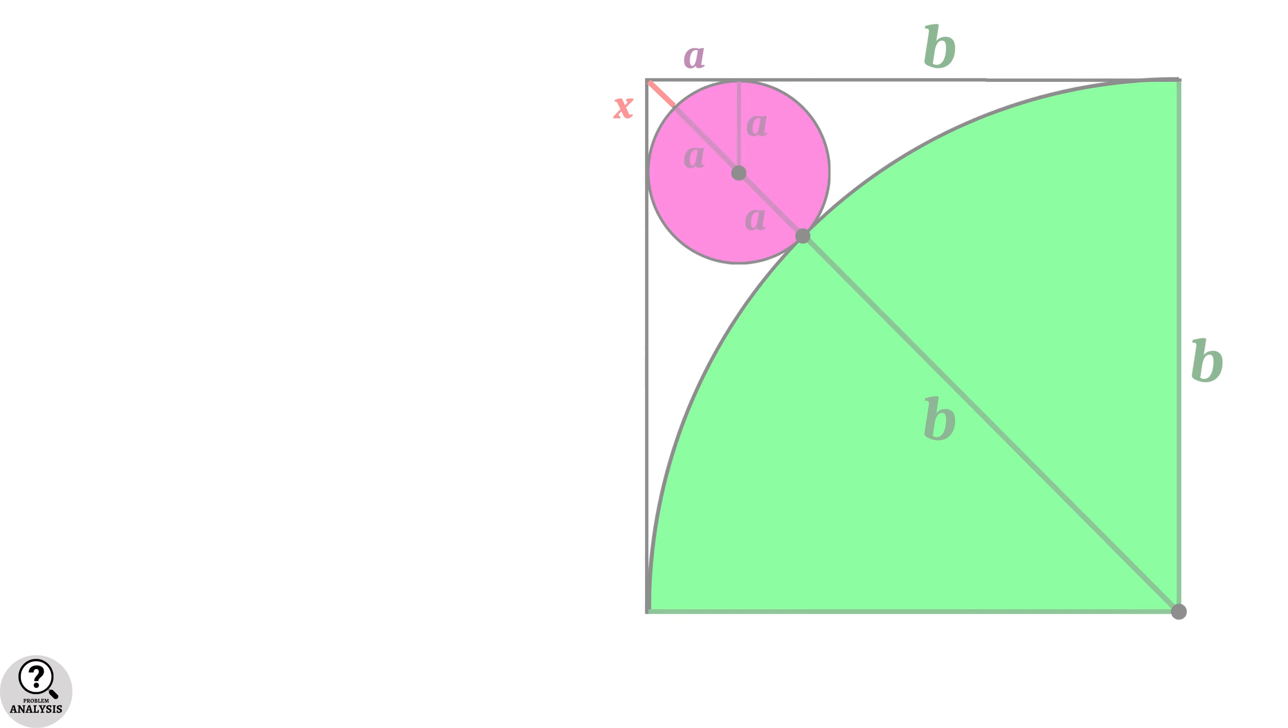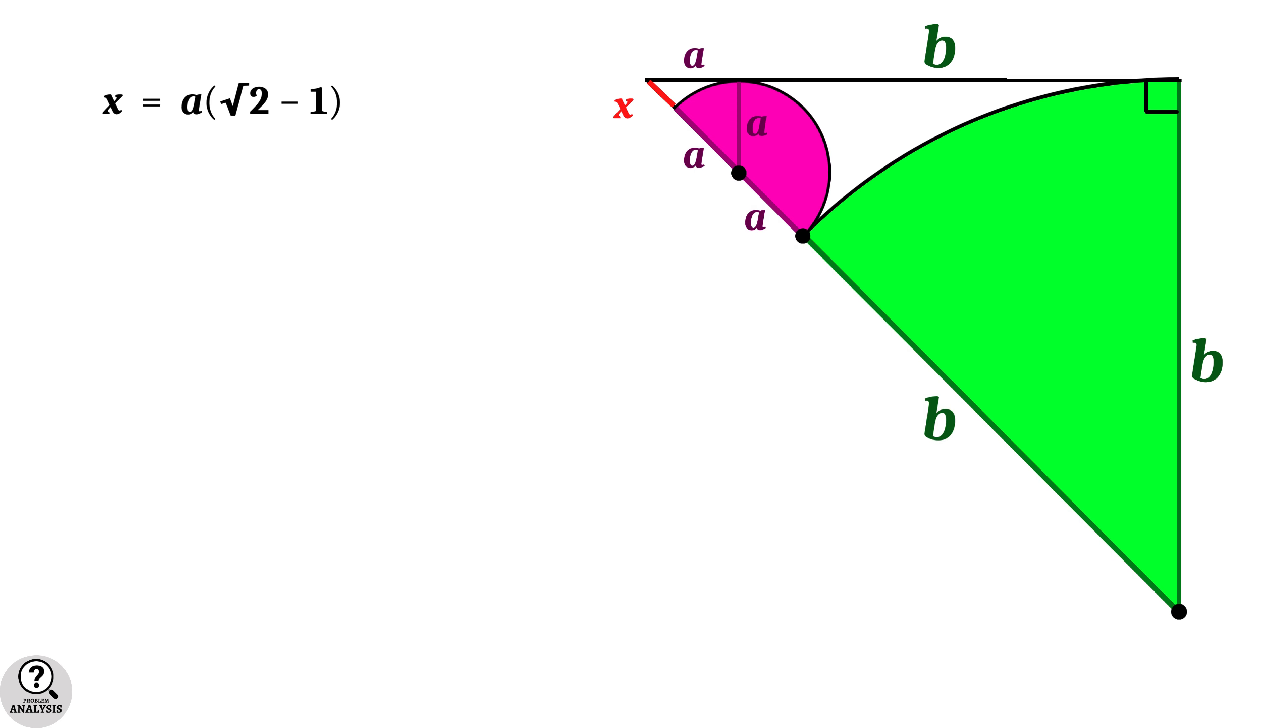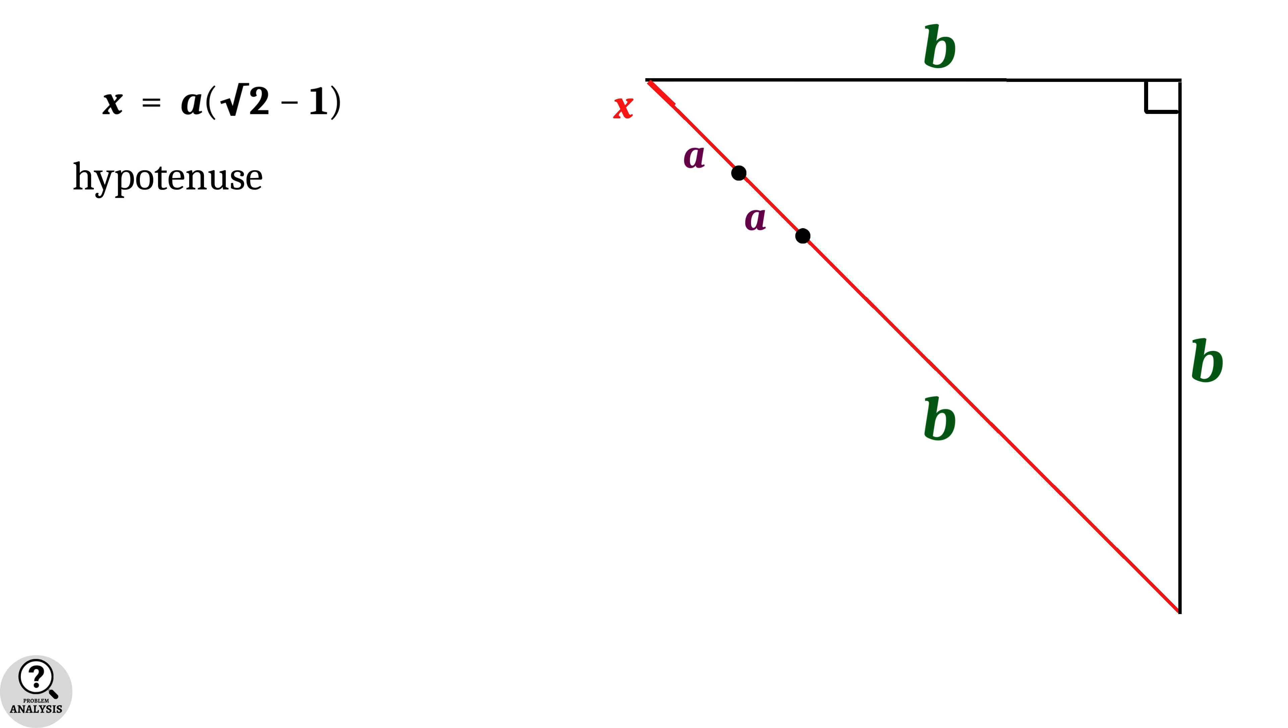Now come back to our diagram and consider this larger right triangle here. Note that its hypotenuse is equal to b + 2a + x. But similar to the previous case, this right triangle is also an isosceles right triangle. That is, the perpendicular sides are equal with length b units, so hypotenuse is equal to b root 2.